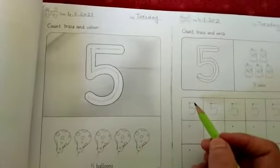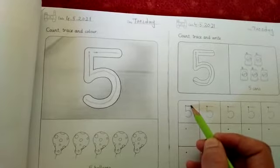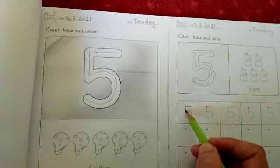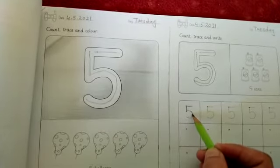And now trace this 5, this line, number 5. First sleeping line, then standing line, and then curve line.